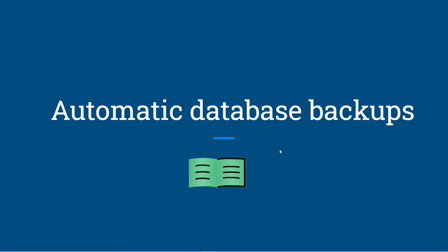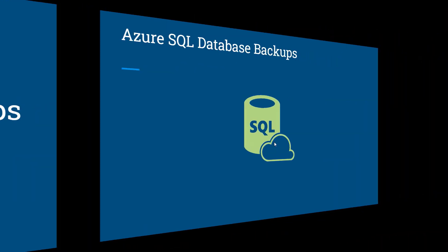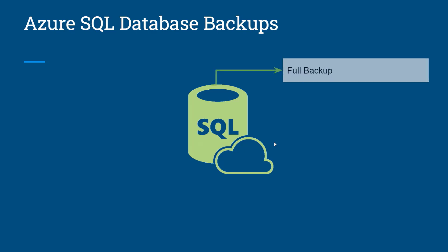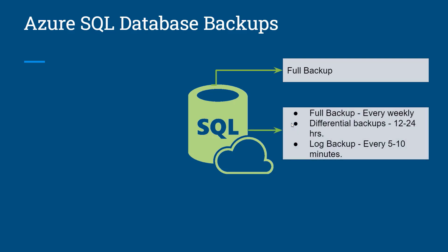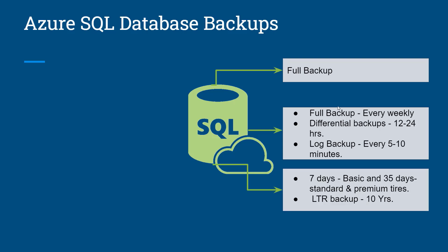In this video we are going to understand how automatic database backup works. In the Azure PaaS model, your database backups are managed by Microsoft. The first full backup triggers immediately once your database is created in Azure SQL. After that, full backups occur every week, differential backups occur every 12 to 24 hours, and log backups trigger every 5 to 10 minutes. The log backup schedule depends on your compute size and the amount of load on your database.